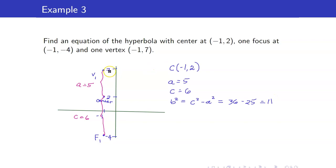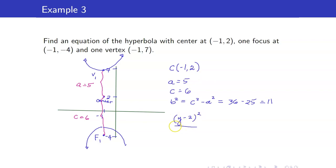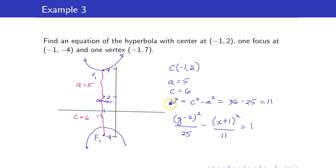Our transverse axis here is a vertical axis. So therefore, we start with the variable y. The equation is (y minus k) squared over a squared, which is 25, minus (x minus negative 1) squared over b squared, which is 11, equal to 1. When finding the equation of our hyperbola, all we have to do is get the center and the constants a, b, and c.